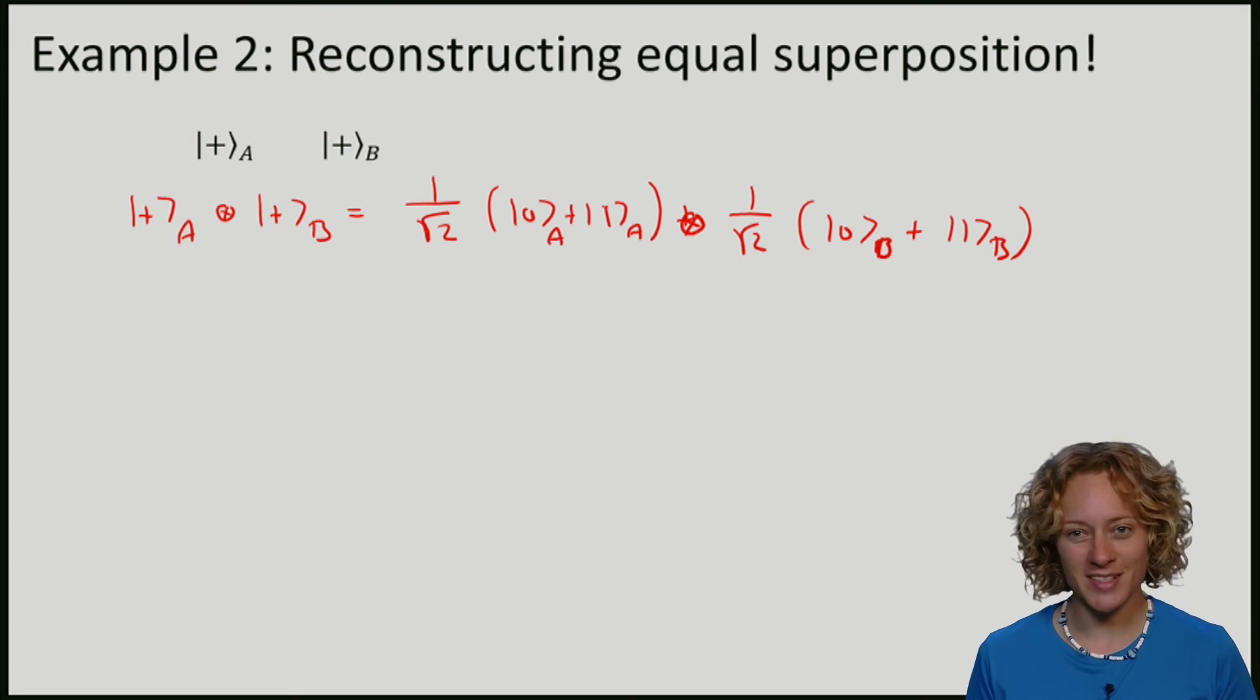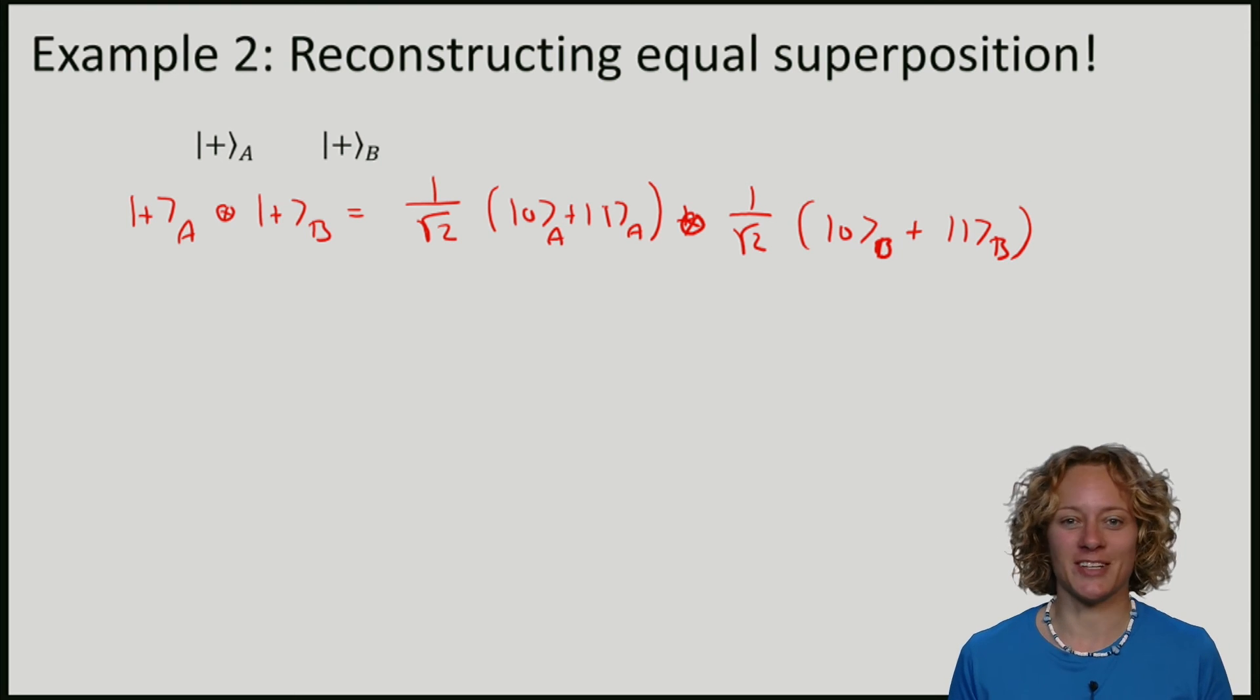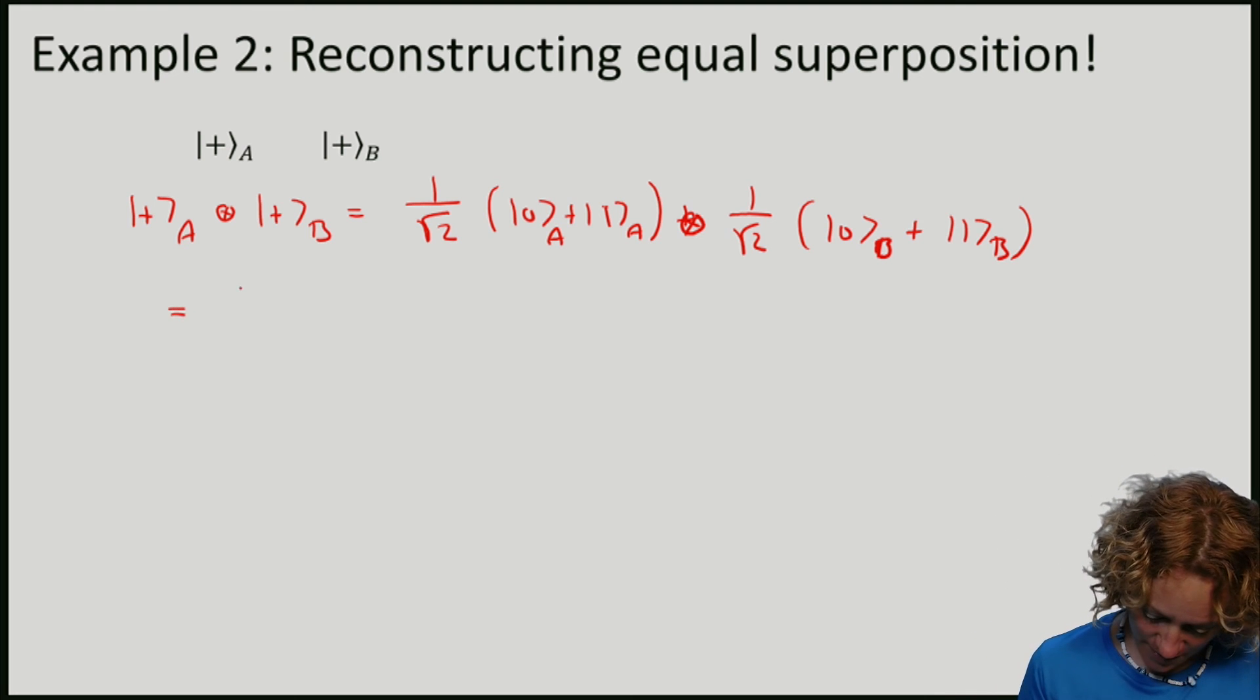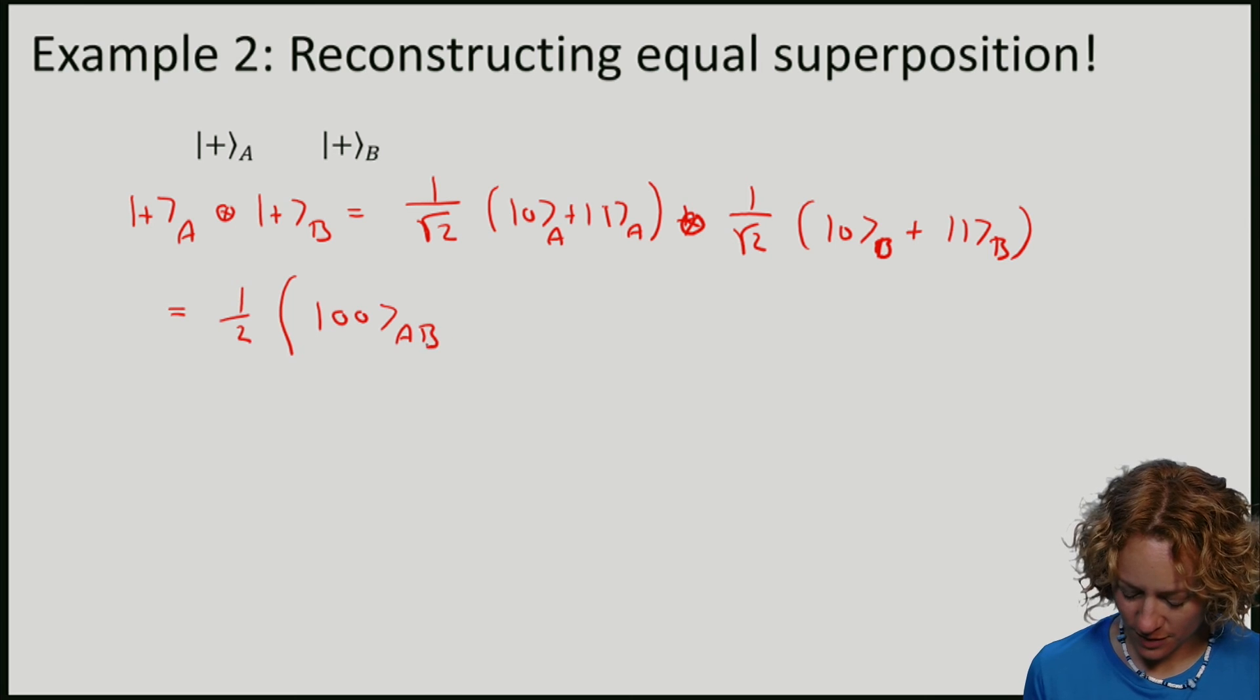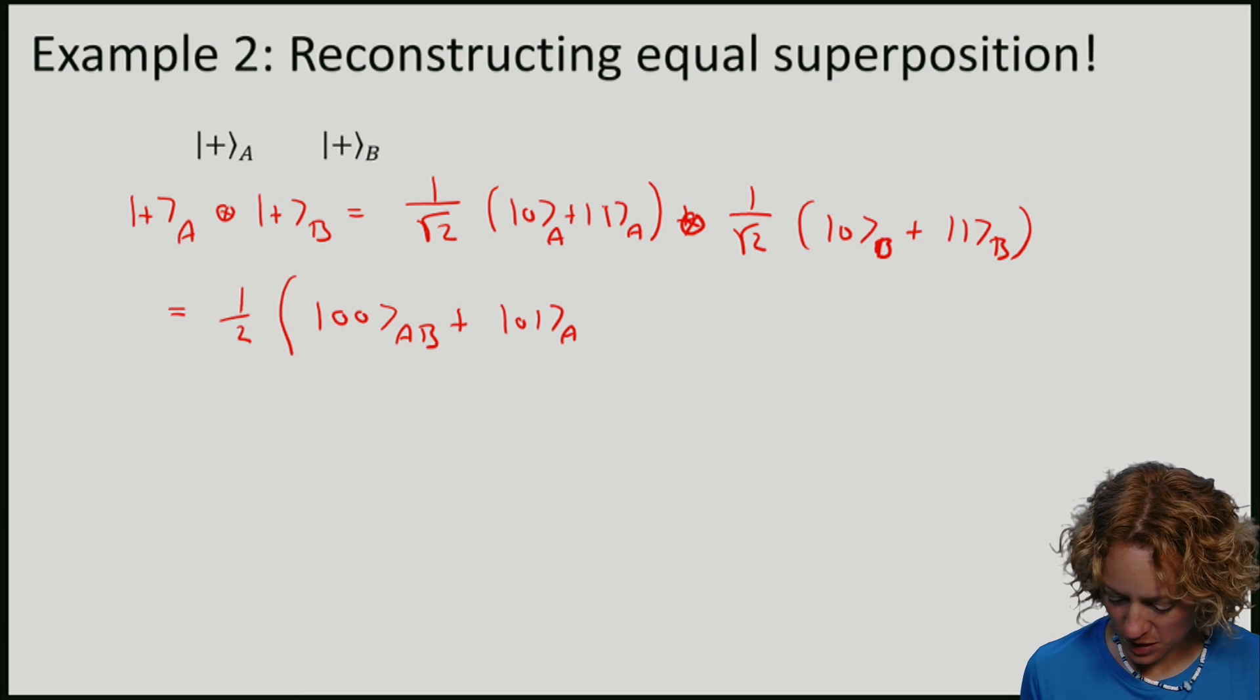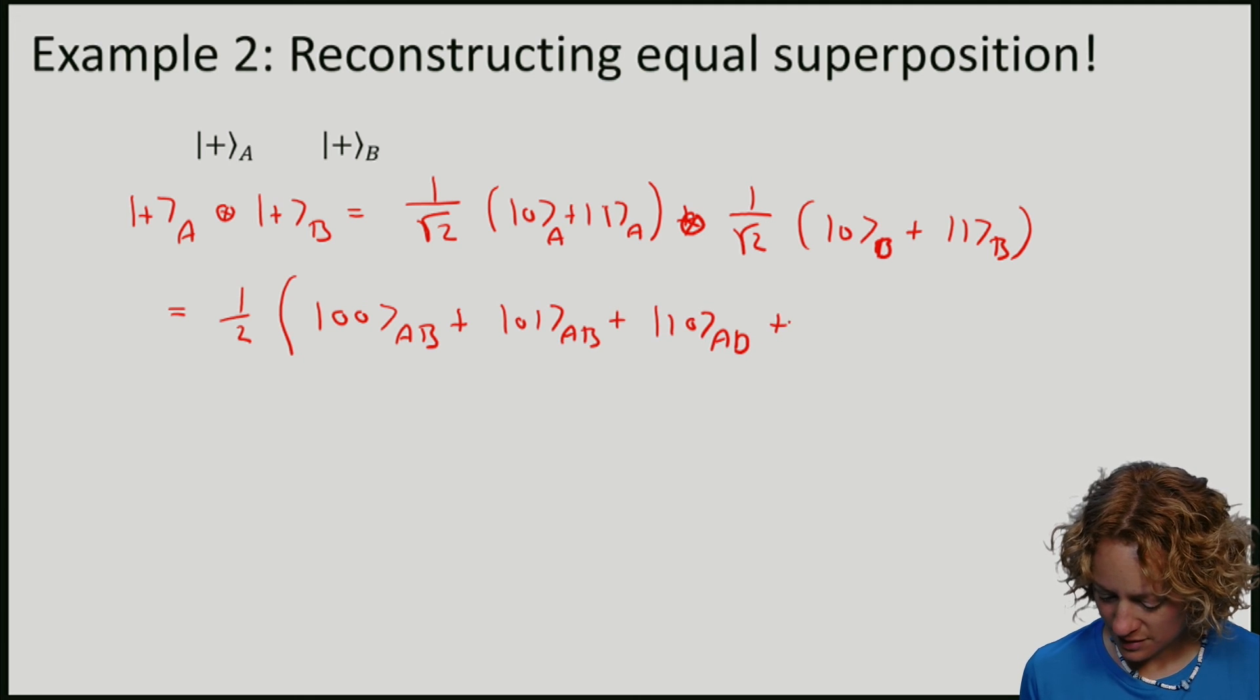We'll compute this now by just using the bra and ket notation. What I'll get is 1/2 times (|00⟩ on AB plus |01⟩ on AB plus |10⟩ on AB plus |11⟩ on AB).